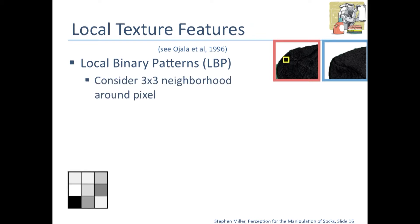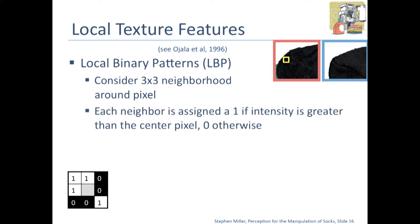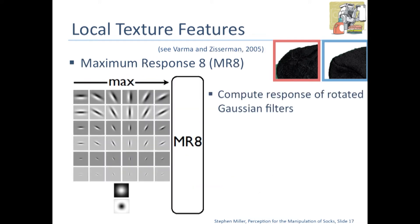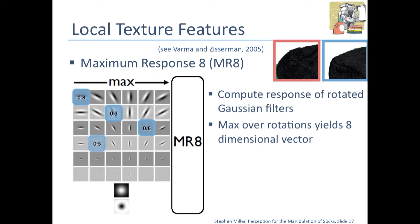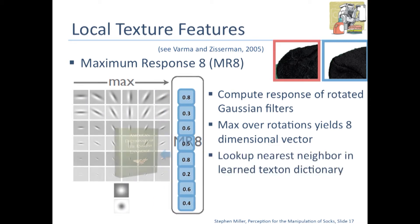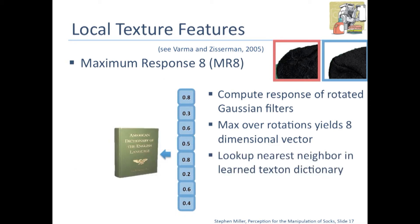One texture feature we used is local binary patterns (LBP), where you take a 3x3 neighborhood around a pixel. Every neighbor is assigned a 1 if the intensity is greater than the center, otherwise a 0. This yields an 8-bit binary string, which we make a histogram over to give a full feature. Another feature we considered is MR8, which computes the response of a pool of Gaussians at various rotations. You maximize over the different rotations to get a rotationally symmetric eight-dimensional vector, look up the nearest neighbor in a learned texton dictionary, and compute a histogram over the textons used.